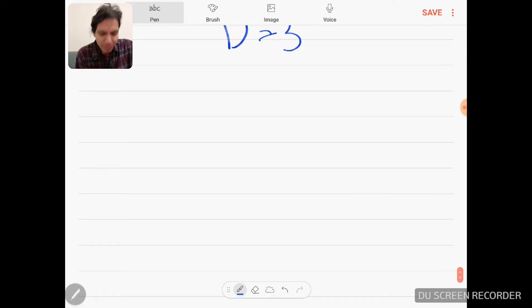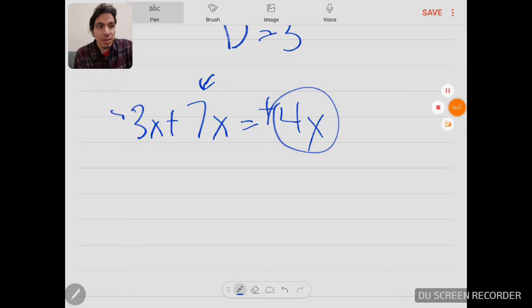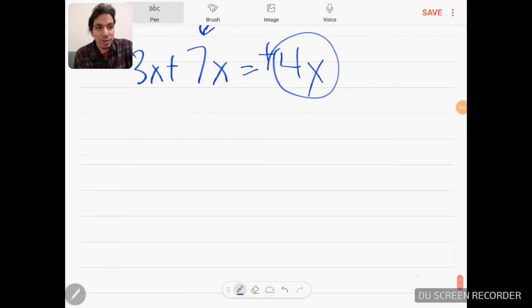You can also combine polynomials. You can only combine polynomials if they have the same powers. So here we have -3x + 7x, which would be 4x, because you keep the sign of the bigger number, which is 7, and then you subtract: 7 - 3 is 4.